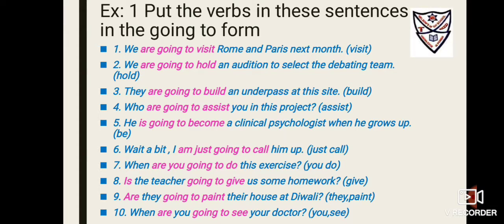Number three uses 'they,' so we use 'are' with the going-to form. Note that after 'to' in the going-to form, the verb always comes in its first form — this is the infinitive, so the verb remains unchanged. Number four: 'Who ___ you in this project?' — so it's 'Who is going to assist you in this project?'